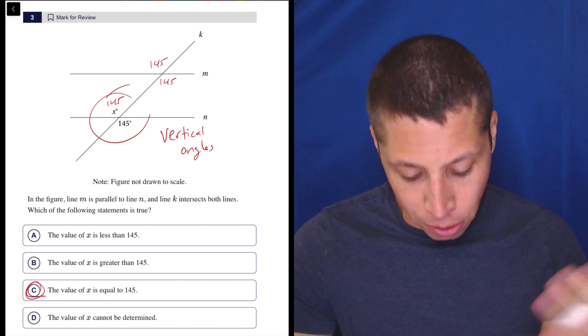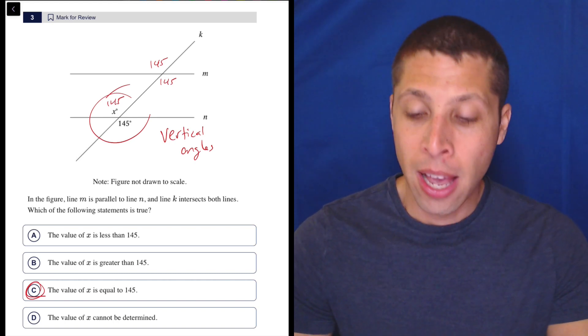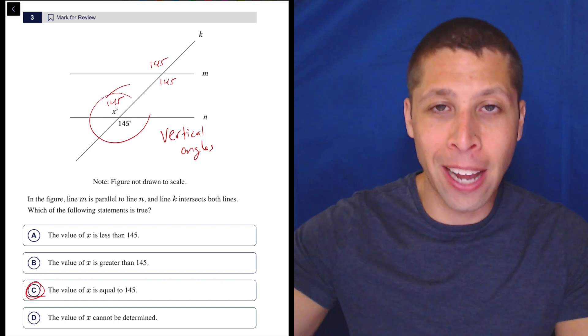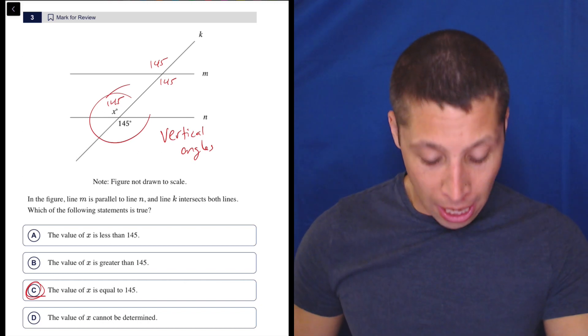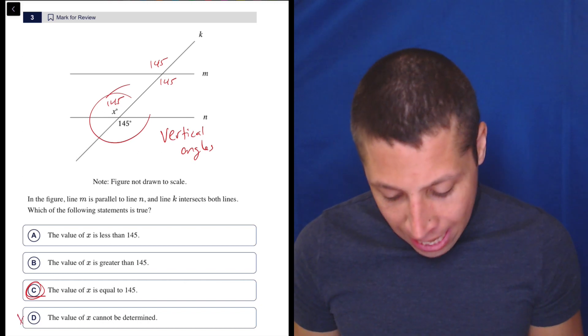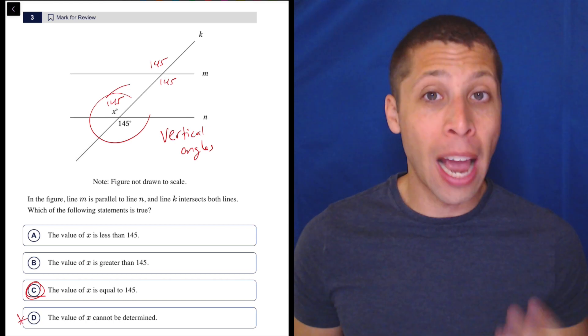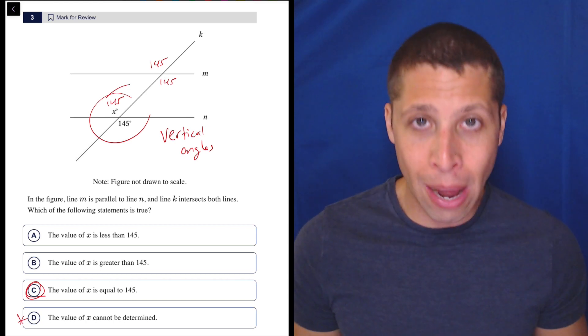So C is the answer. The value of x is equal to 145. But for the sake of dragging this out so it doesn't become a YouTube short, let me just talk a little bit about choice D, because this is an answer choice that could come up in lots of different types of questions, and there are lots of strategies around it.